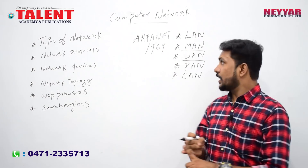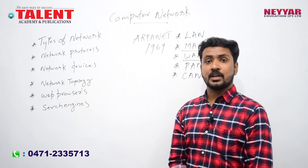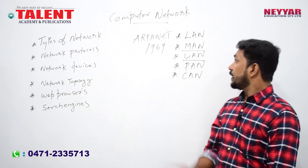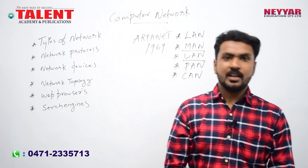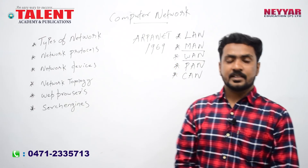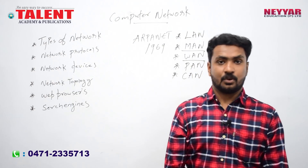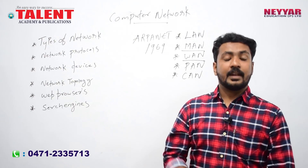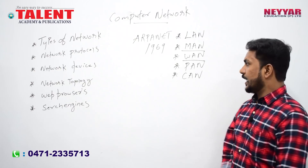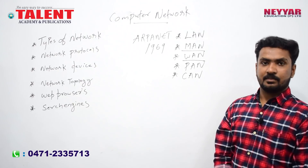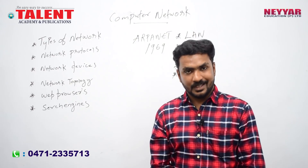Summary: LAN — Local Area Network, smallest computer network inside a building. MAN — Metropolitan Area Network, designed for a city or town. WAN — Wide Area Network, the largest network connecting computers across geographic areas. PAN — Personal Area Network, for interconnecting devices centered on an individual person's workspace. CAN — Campus Area Network, a computer network that links buildings, consisting of two or more local area networks within a limited geographical area.